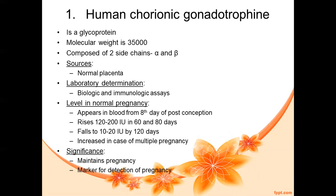Moving on to the source of HCG — from where does HCG come? HCG is a hormone produced from the placenta. The source of HCG is the normal placenta, and the presence of HCG can be determined by biological and immunological assays.